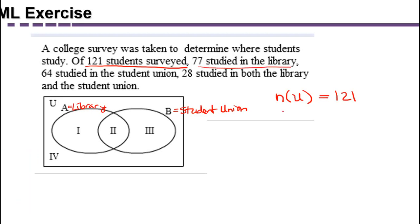Another fact that we know is 77 studied in the library. So that's referring to the total number in the set A is 77. By the way, that refers to regions 1 and 2, just like 121 referred to regions 1, 2, 3, and 4.